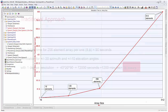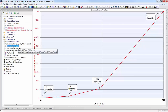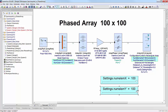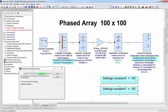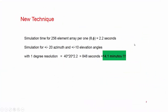This translates to a 20-hour simulation for a 256-element phased array scanning over plus-minus 20 degrees in azimuth and plus-minus 10 degrees in elevation with one-degree resolution. Fortunately, the tool used here has a technique that makes the simulation run several orders faster. To use this technique, we just need to construct one schematic and simulate any arbitrary-sized array. For example, even a 10,000-element phased array simulates in two seconds. With this kind of speed, the earlier 256-element array example will simulate in just 14 minutes. Having this technique makes the phased array design a lot more efficient and fun.